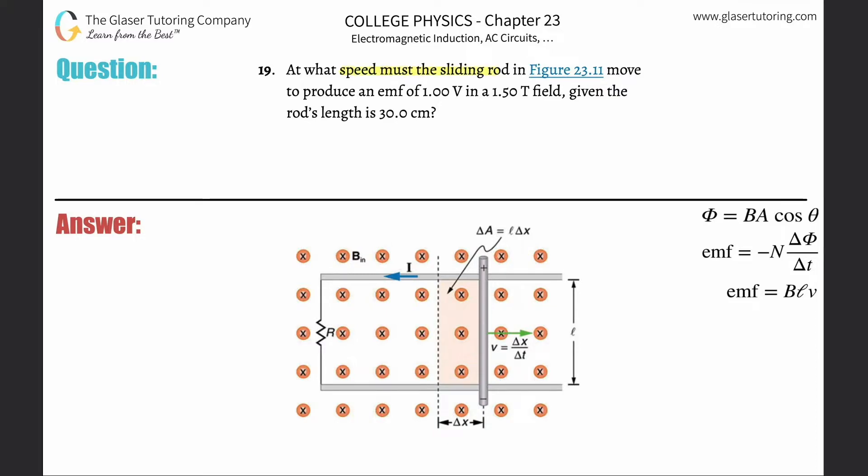Number 19, at what speed must the sliding rod in figure 23.11 move to produce an EMF of 1 volt in a 1.5 tesla field given the rod's length is 30 centimeters?